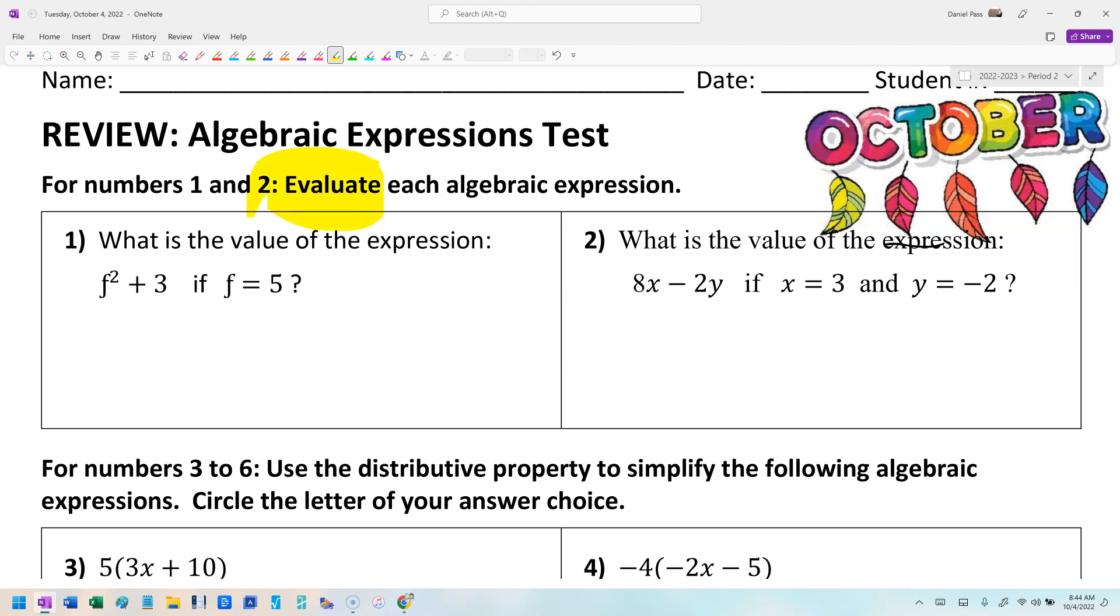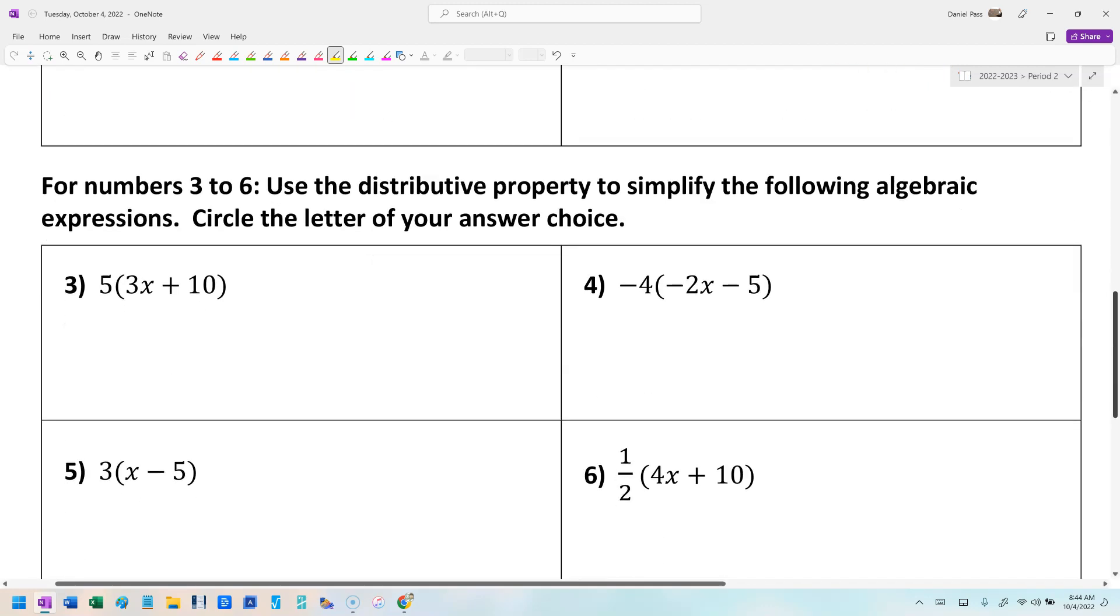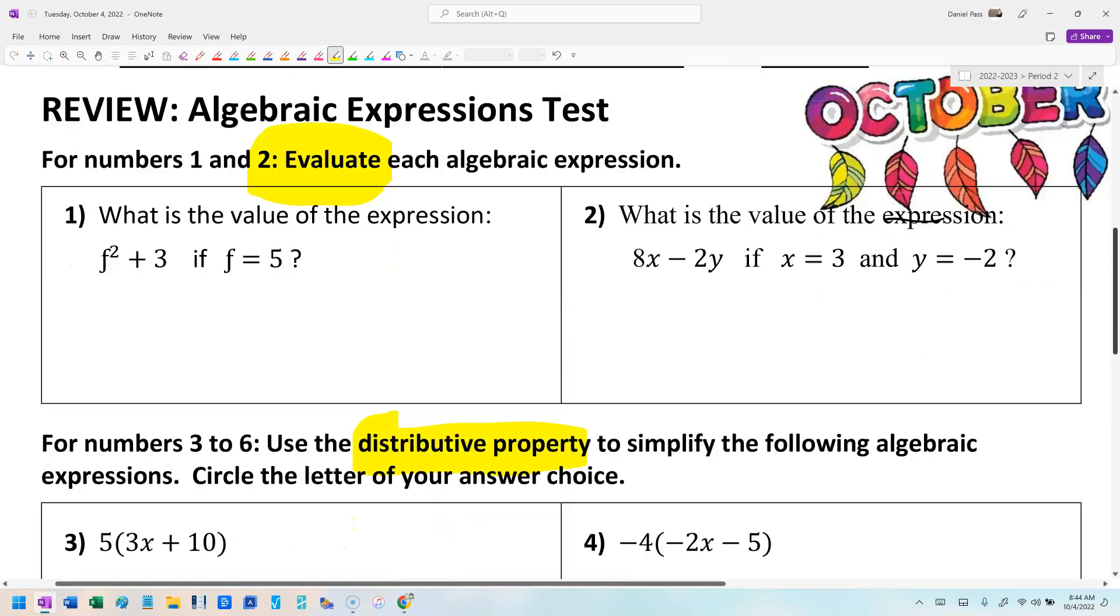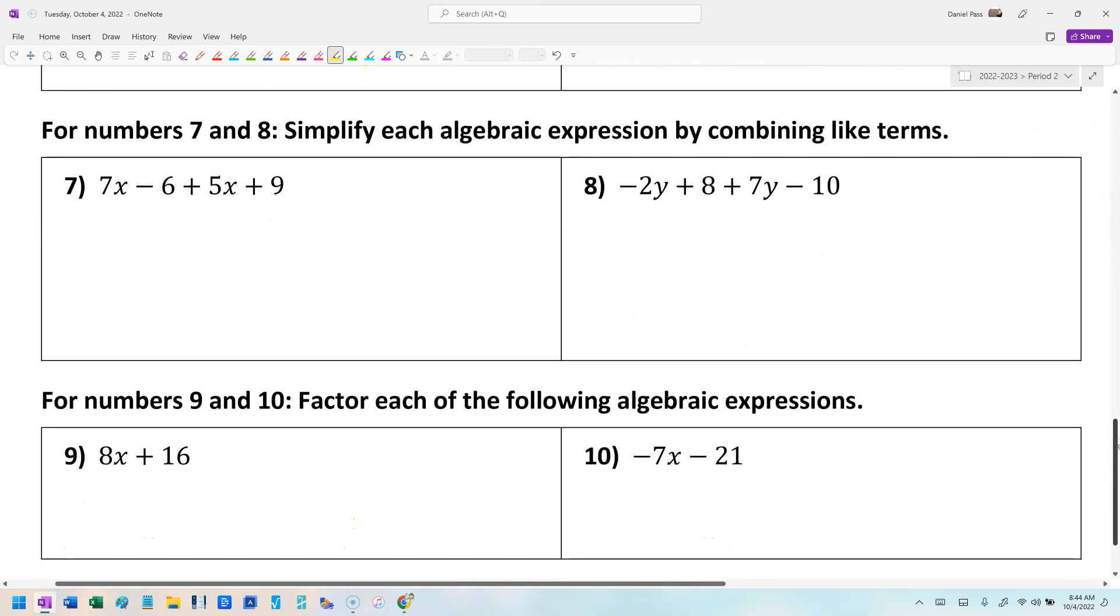Evaluating expressions, which is just like the menu, right? Finding a price of something. And then distributive property, which is those arrows. Combining like terms.